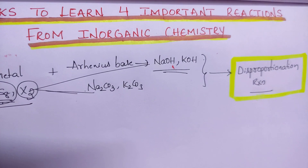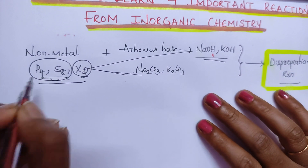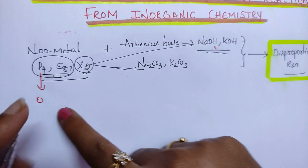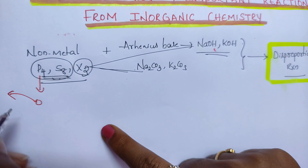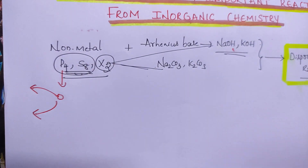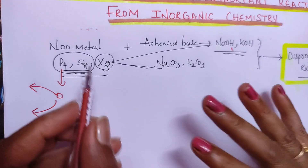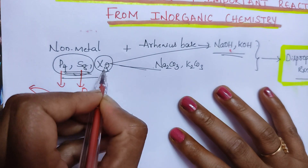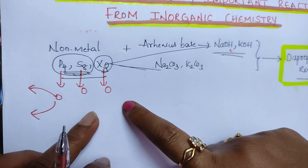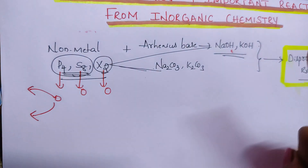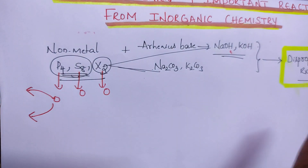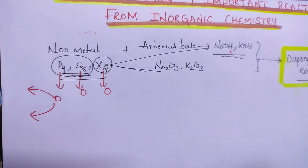What does disproportionation mean? For example, phosphorus is in zero oxidation state. The same element goes to a lower oxidation state as well as a higher oxidation state. Similarly, sulfur and X2 are both in zero oxidation state. These elements produce two products: one with a lower oxidation state, one with a higher oxidation state.